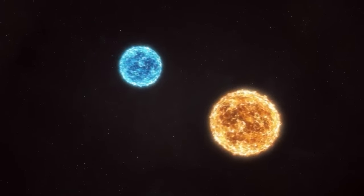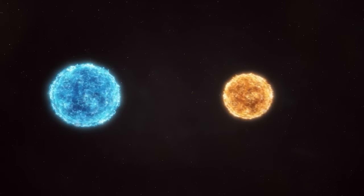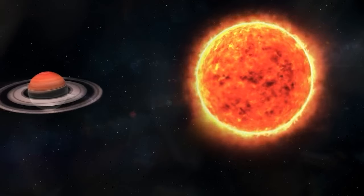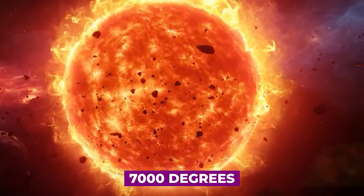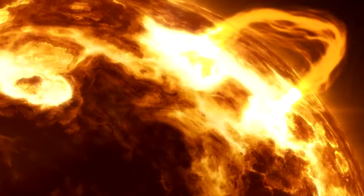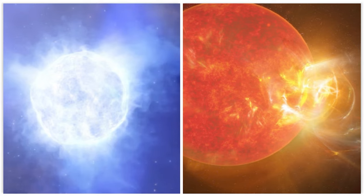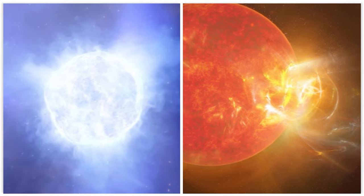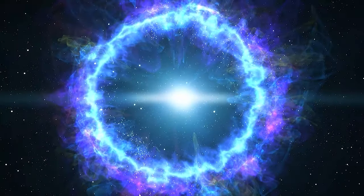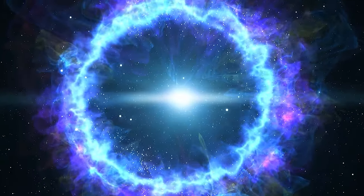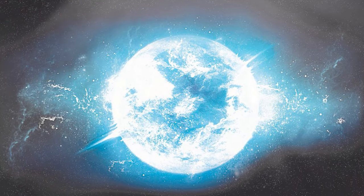After a red dwarf's life cycle ends, it will enter an intermediate stage called a blue dwarf. The big change is that it will become much hotter and brighter. Its temperature will rise to around 7,000 degrees Kelvin, and it will stay like this for about 5 billion years. Once a blue dwarf runs out of hydrogen fuel, it will transform into a white dwarf. White dwarfs, sometimes called degenerate stars, are what's left after a star dies. They're incredibly dense and made up of electron-degenerate matter. Despite being as heavy as the sun, they're squeezed into a space about the size of Earth.